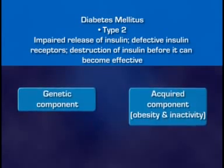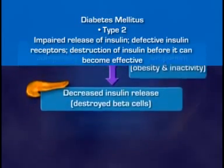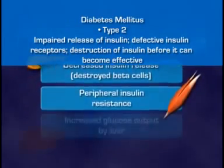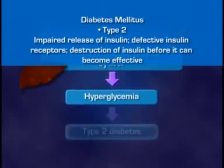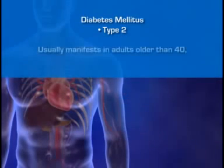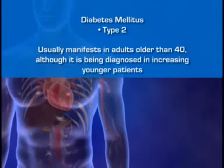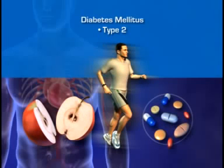Among acquired factors, obesity and physical inactivity are of paramount importance. The metabolic abnormalities that lead to type 2 diabetes include insufficient secretion of insulin by the pancreatic beta cells, peripheral insulin resistance, and increased glucose output by the liver. In type 2 diabetes, hyperglycemia develops despite the availability of insulin. Type 2 diabetes usually manifests in adults older than 40, although it is being diagnosed in increasingly younger patients. It can often be controlled by diet, exercise, and oral hypoglycemic agents, and patients may or may not require insulin injections.